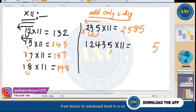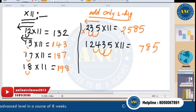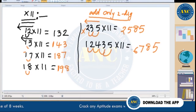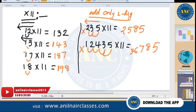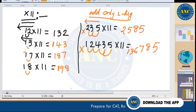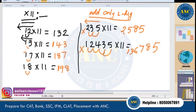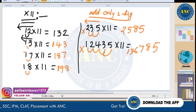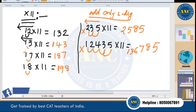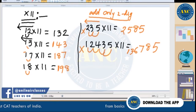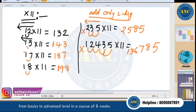For 124325 × 11: right to left — write 5, 5+2=7 wait — 5+2=7 no carry; 2+3=5; 3+4=7; 4+2=6; 2+1=3; write 1. Answer: 1,367,785. Some members gave slightly wrong answers — answer is 1,367,785.